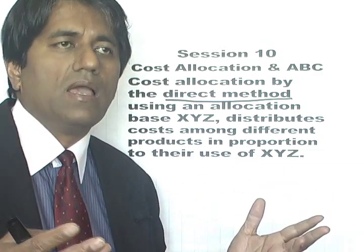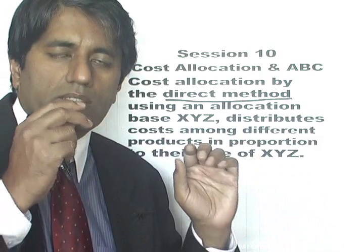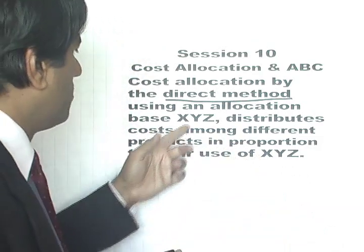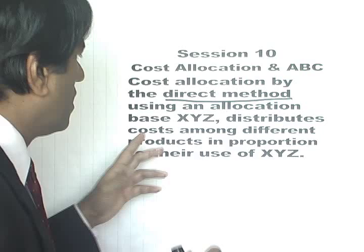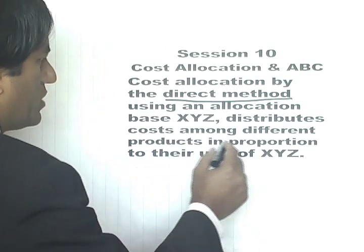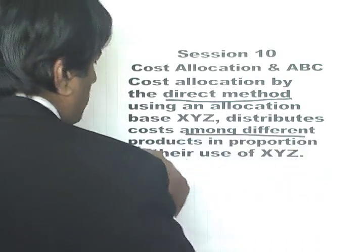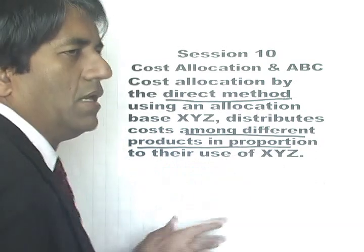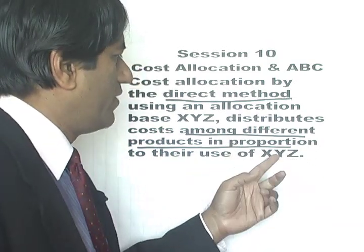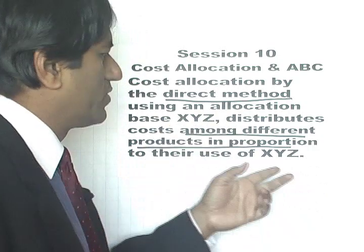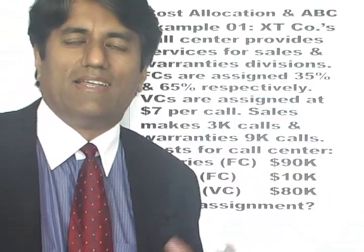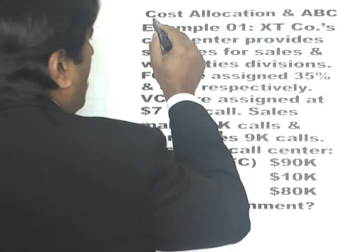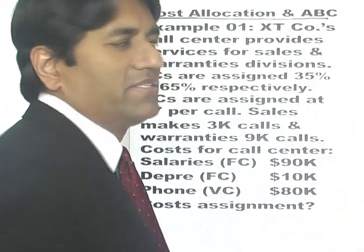It could be labor. Depending on the base criteria, the costs are distributed among the different products in proportion to the use of that criteria. Let's say the allocation criteria is XYZ. Now we come to the chapter on Cost Allocation and Activity-Based Pricing.